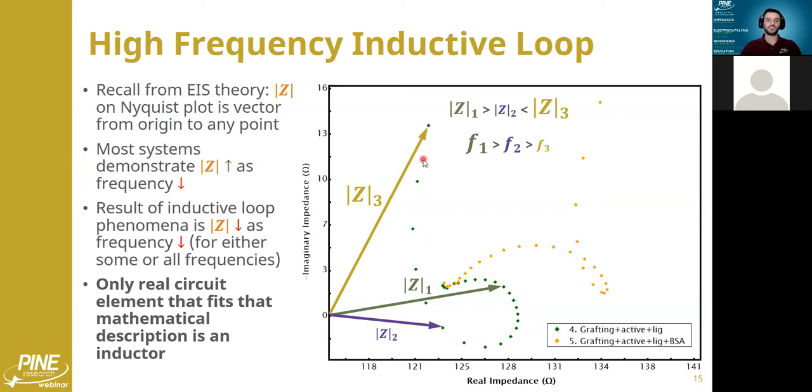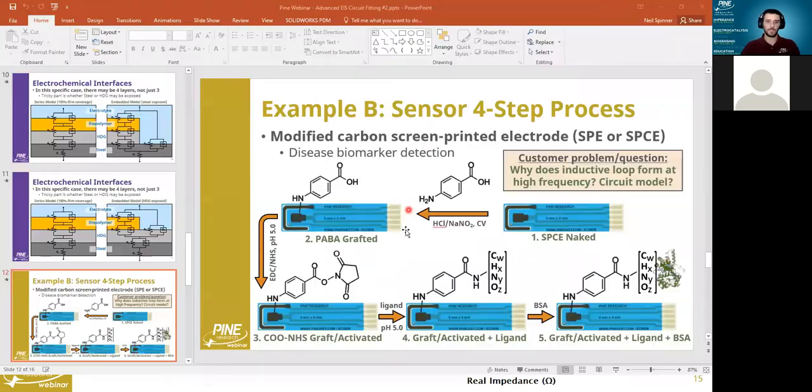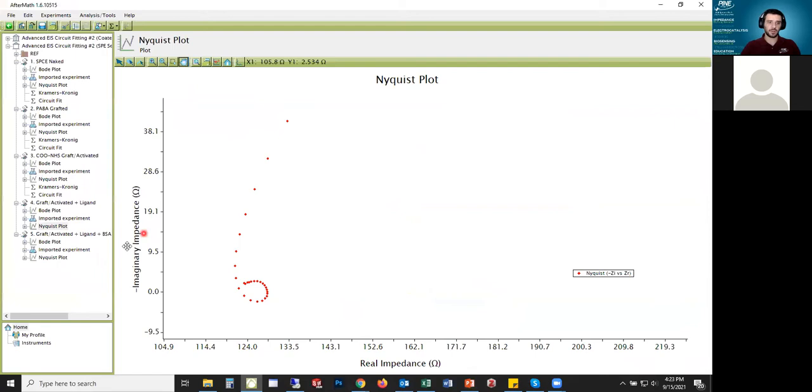I'm applying a model that doesn't necessarily have physical meaning. It's just an inductor to make this loop happen, but I'm doing it because I want to fit the rest of my data. I want to get a value for the charge transfer resistance and the capacitive element of the rest of my data. And so to do that I have to fit this part. And so to do that I need an inductor. So that's kind of a roundabout way of saying why I need to use this inductor.